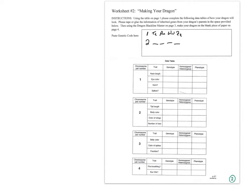Do the same for all chromosomes. Decide what's homozygous — and where are you getting this information? From your genotype. Where'd you get your genotype? From deciding if it was homozygous or heterozygous, which depended on your phenotype — meaning what you want your dragon to look like: short neck or long neck, eye color, horn, spikes, etc. You would do this for all four chromosomes, with all the genotypes you get off the table on page one.